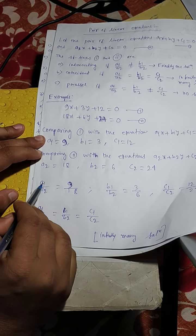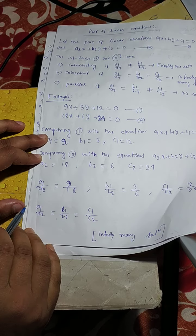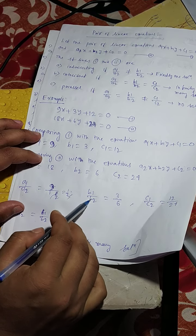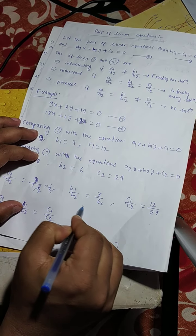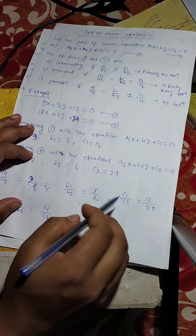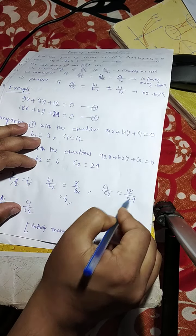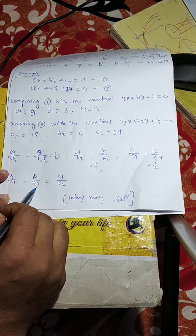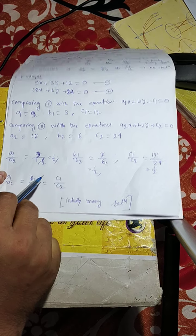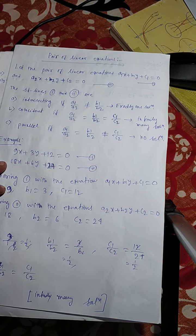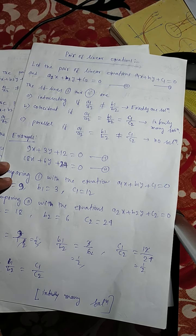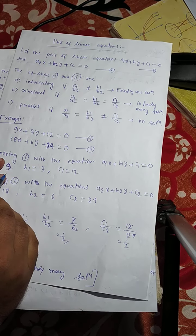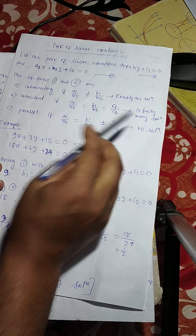So here, a1 by a2 equals to 9 by 18, which is 1/2. b1 by b2 equals to 3 by 6, that means 1/2. c1 by c2 equals to 12 by 24, that means 1/2. So a1 by a2 equals to b1 by b2 equals to c1 by c2. Therefore, lines 1 and 2 are coincident, or we can say that equations 1 and 2 have infinitely many solutions.